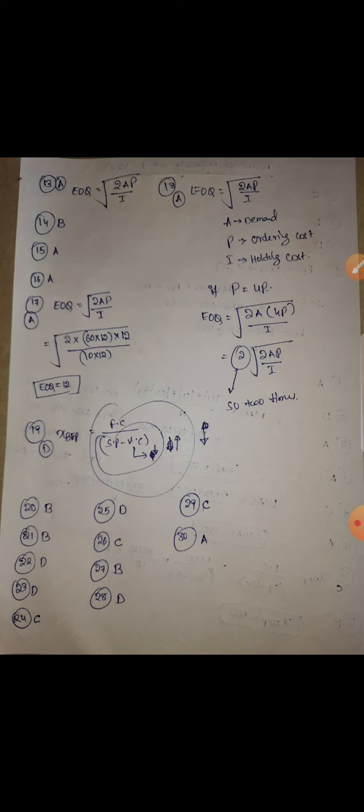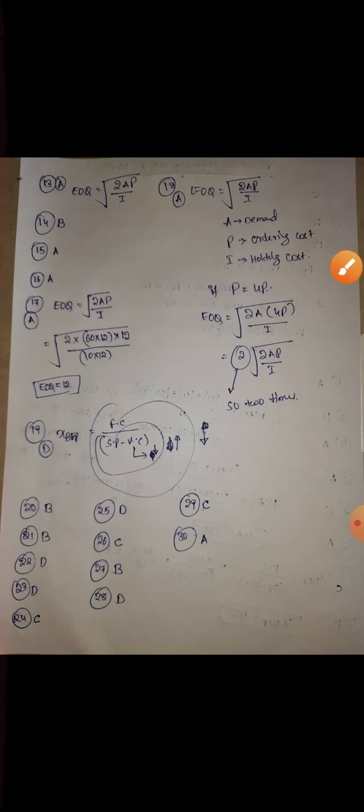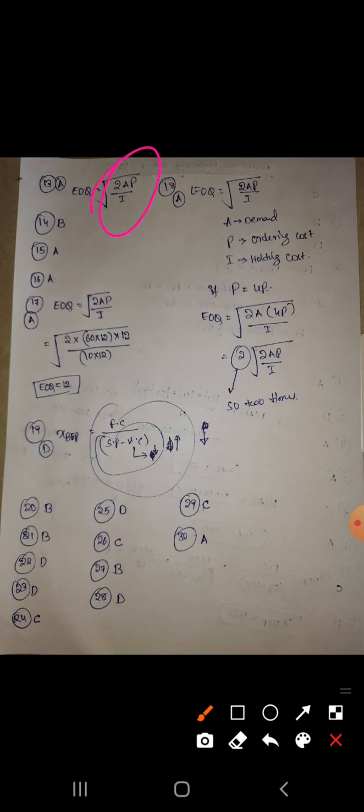Twelfth is B, optimum lot size. EOQ is optimum lot size. Thirteenth question: the formula EOQ = √(2AP/I), where A is the demand, P is the ordering cost, I is the holding cost. That is the formula for EOQ. Remember that formula, very important.